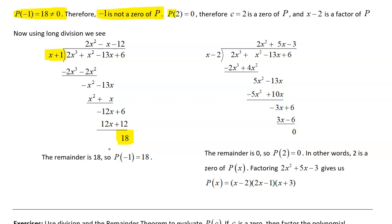But then when they plugged in a value of 2 into p, then they got a 0. So that means c equals 2 is a zero of the p of x function, and that x minus 2 is a factor.